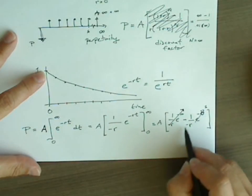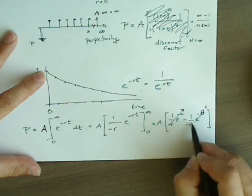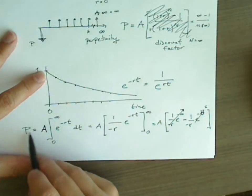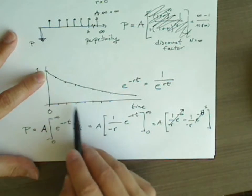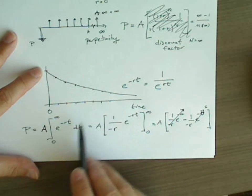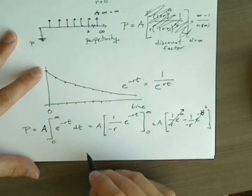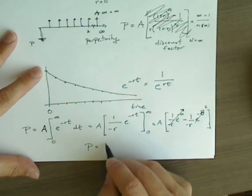So that simplifies as well. Now we have negative 1 over negative R. That is to say, P, the present value of this infinite stream of payments, when discounted using the exponential discount formula, equals A divided by R.